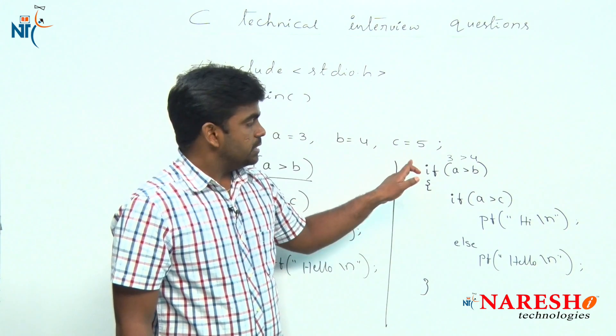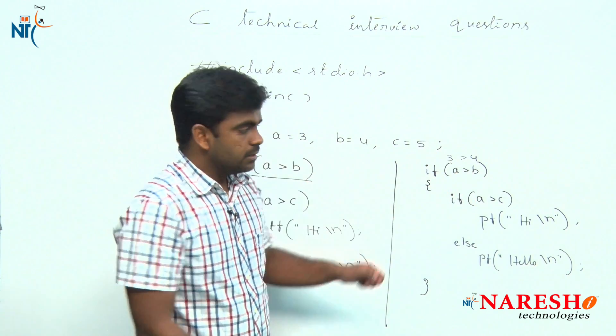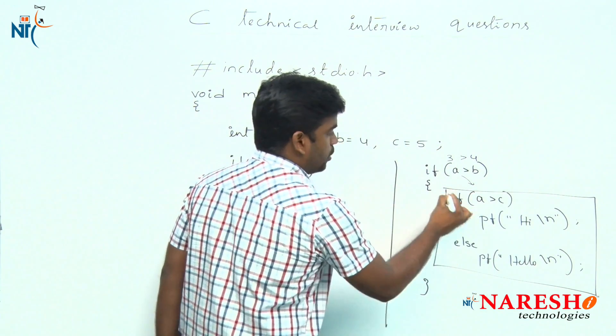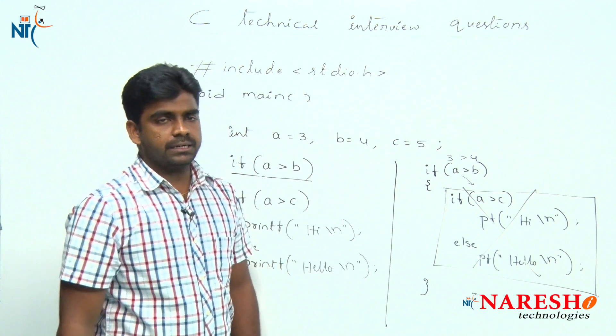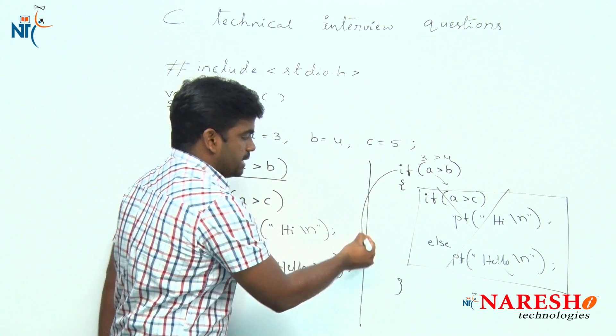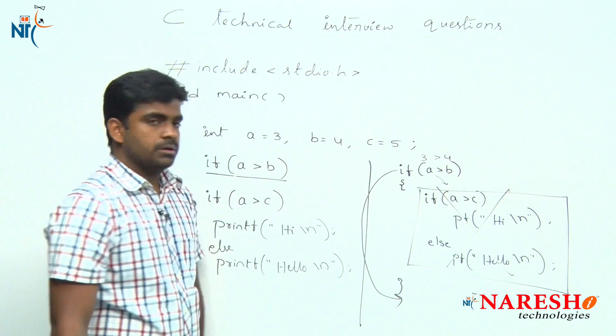Whenever the if condition has failed, the control will not enter into this if block. This complete if block will be terminated and it is looking for else block. Where is the corresponding else block to this outer if? It is not there.